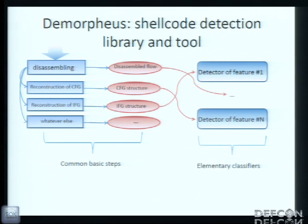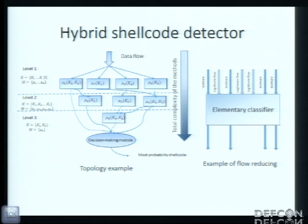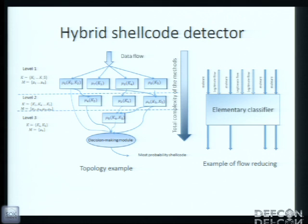It seemed reasonable for us to implement the shellcode detection library in the way described in the current slide. Here's the main idea of our hybrid shellcode detector: we tried to construct an optimal data flow graph from elementary classifiers implemented in the shellcode detection library. If some classifier concludes the flow to be legitimate, such flow doesn't pass to the other classifiers.